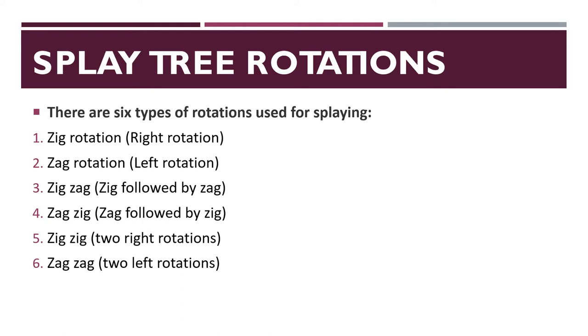Splay tree rotations — there are six types of rotations. They are zig rotation, zag rotation, zig-zag rotation, zag-zig rotation, zig-zig rotation, and zag-zag rotation.